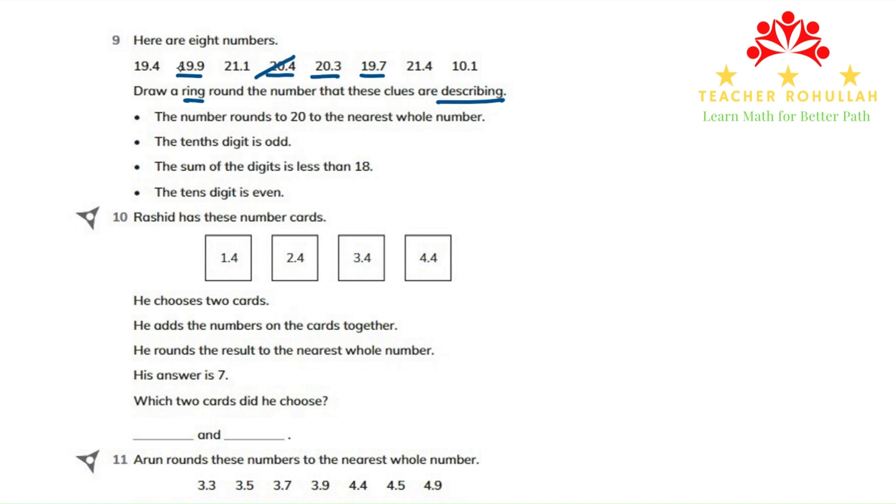So 19.9, if we add the digits, it will be more than 18, so it cannot be. 20.3 can be because it is less than 18. 19.7 can also be because it is less than 18.